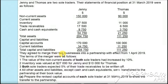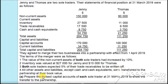They agreed to merge their businesses into a partnership with effect from 1st April 2019. The terms of merger were as follows: the value of non-current assets of both sole traders has increased by 10%. The inventory was valued at $27,000 for Jenny and $10,000 for Thomas. Both sole traders expected 5% of the trade receivables to be written off. All other assets and liabilities except cash and cash equivalents were transferred to the partnership at their book value.